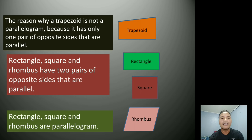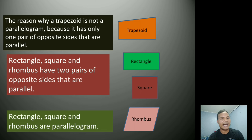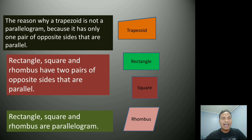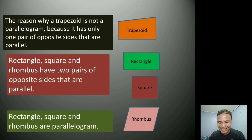When we say parallel, these are two or more lines that, if we continue them, will never intersect each other. Like two parallel lines — if we extend segment AB and segment CD, they will never intersect each other. That is parallel.